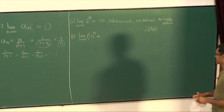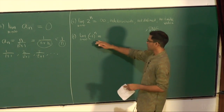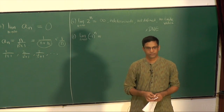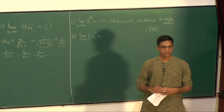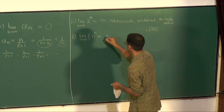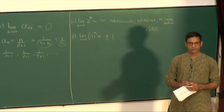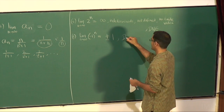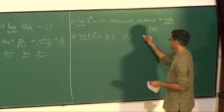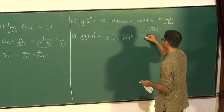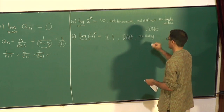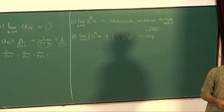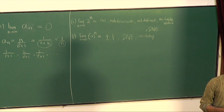Now, what about the sequence -1, +1, -1, +1, and so on — alternating between plus and minus 1 at every step? What's the limit? Suggested answers: plus or minus 1, does not exist, oscillating between +1 and -1. If you're asked what the limit is, the answer is: does not exist.